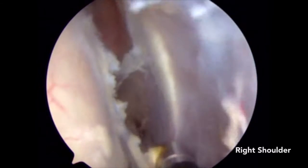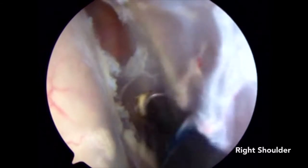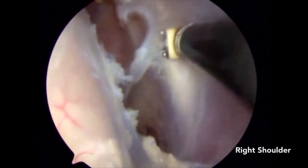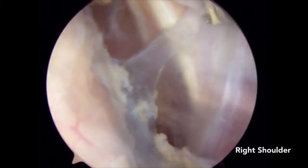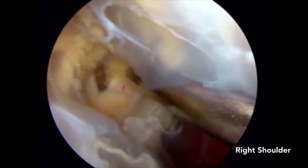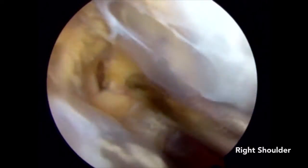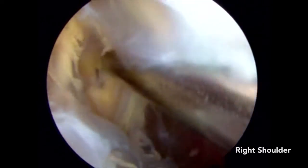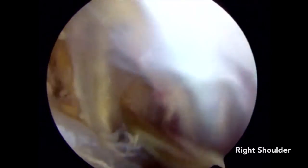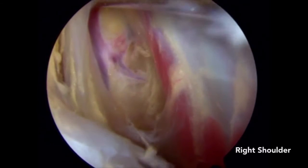With the arthroscope in the anterolateral portal, adhesions are carefully taken down bluntly and with an electrocautery device. Using a switching stick, soft tissues are carefully divided. Great care is taken to not violate the axillary artery that runs nearby the axillary nerve.